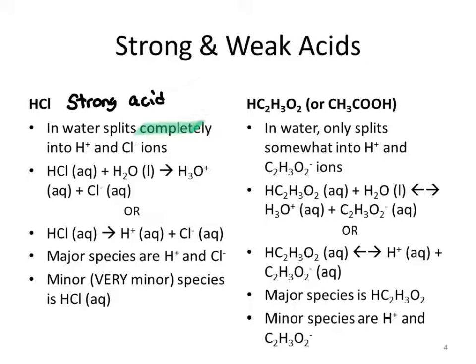The major species in HCl solution are the hydrogen ion and the chloride ion. The minor species — very, very minor — would be intact hydrochloric acid molecules. This is basically non-existent, because we say it dissociates completely. Technically a couple of intact molecules could be floating around, but really it's non-existent.